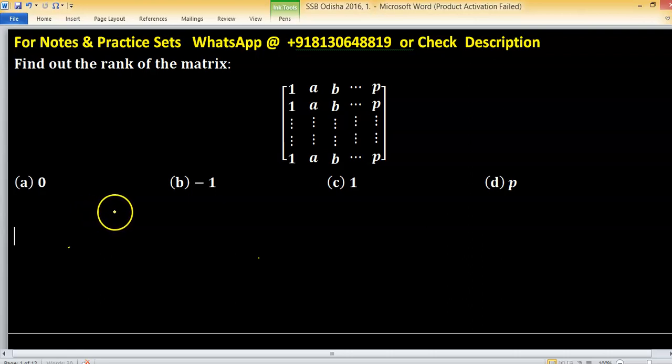If we observe rows of this matrix, the rows are 1, a, b, ... p; 1, a, b, ... p; or like downward, 1, a, b, and so on, p.